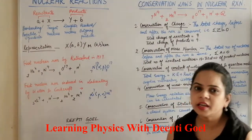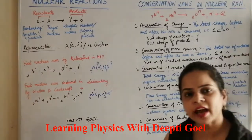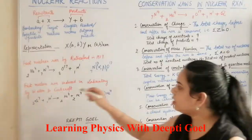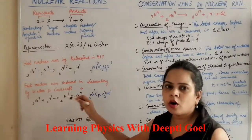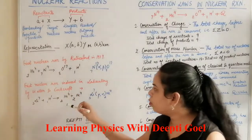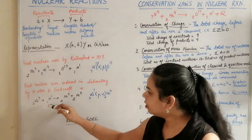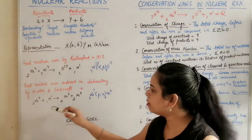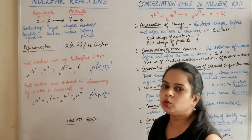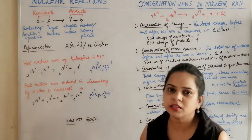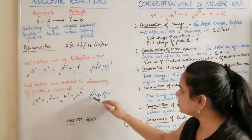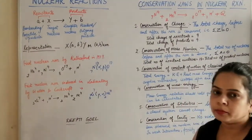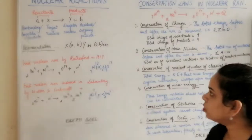Similarly, the first nuclear reaction carried out in a laboratory by Walton and Cockcroft was the bombardment of a proton on lithium, producing two alpha particles. It is represented as 3Li7(p,α)helium.